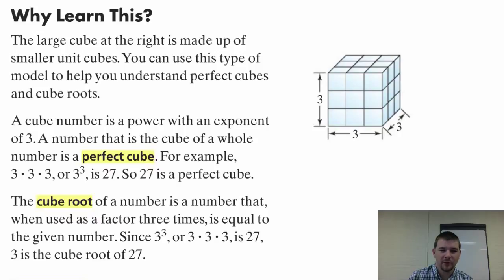The cube root of a number is a number that, when used as a factor three times, is equal to the given number. Since three cubed, or three times three times three, is 27, three is the cube root of 27.